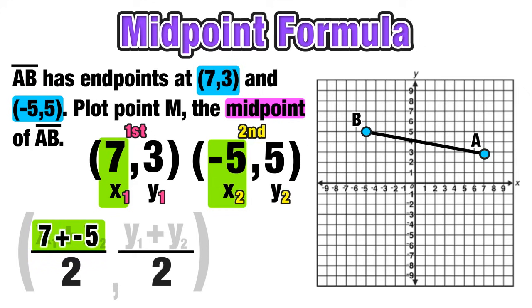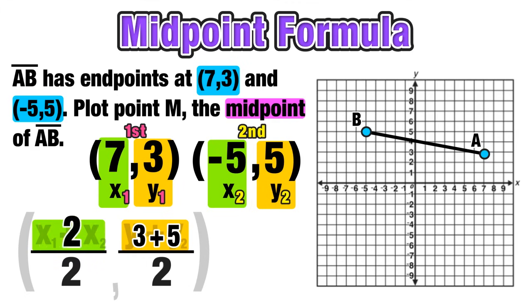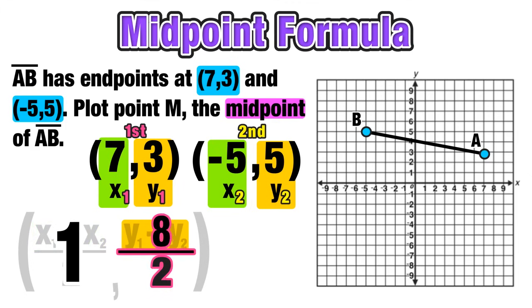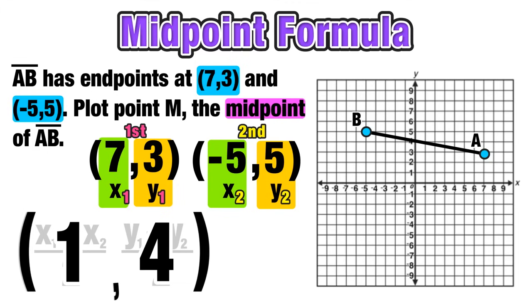On the left side, X₁ plus X₂ is 7 plus negative 5; on the right side, Y₁ plus Y₂ is 3 plus 5. Evaluating: 7 plus negative 5 equals positive 2, and 3 plus 5 equals 8. Finally, 2 divided by 2 equals 1, and 8 divided by 2 equals 4. So using those two endpoints in the midpoint formula, the midpoint of line segment AB is at (1, 4).